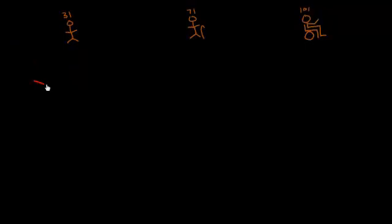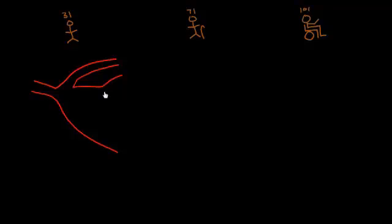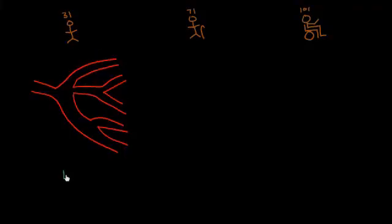Let me draw three versions of myself: present me at age 31, future me with a cane at age 71, and the really old version at 101 waving from a wheelchair. If I draw a simplified arterial tree — a vessel coming through with several branches — right now at age 31, my arterial tree looks pretty clean. Blood is flowing through very smoothly, out to feed the kidney, ears, eyes, and foot — making its way through with no trouble. That's why my resistance was 18.